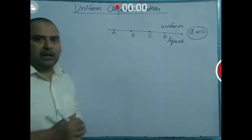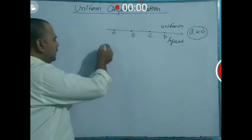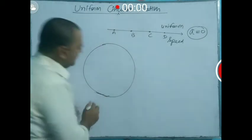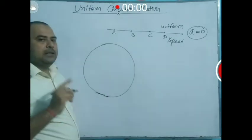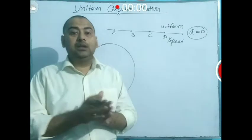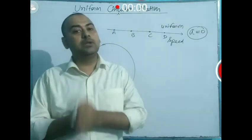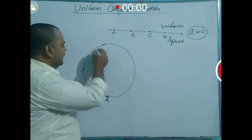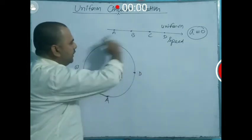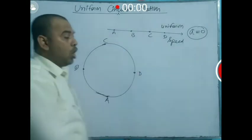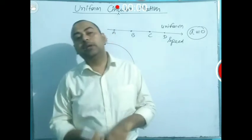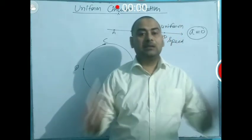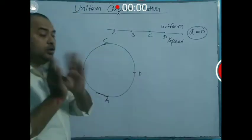Just like straight-line motion, we can say that for uniform circular motion, this is the circular path. A body moving on a circular path with a uniform speed is known as uniform circular motion.